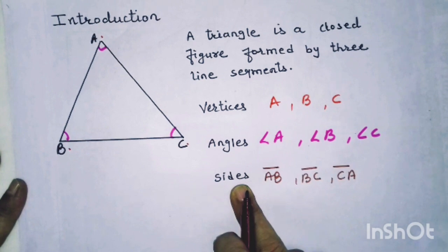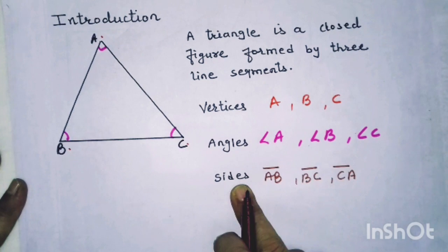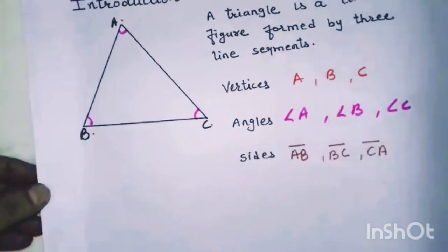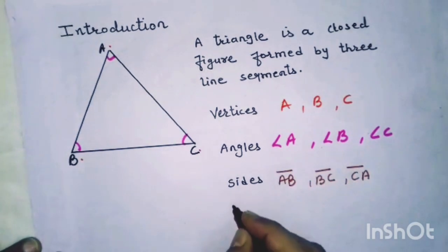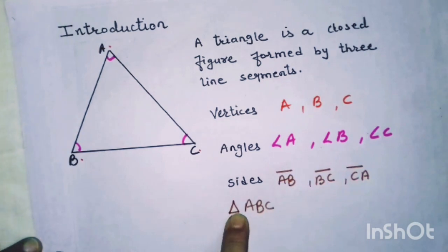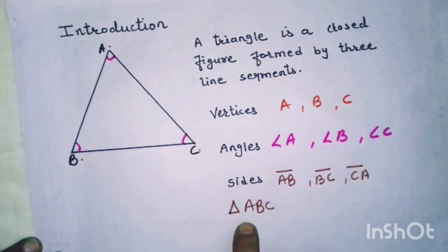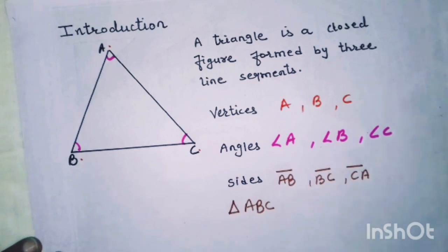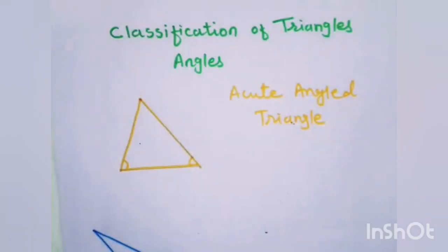These are known as elements of a triangle. And now how are we writing symbolically triangle? Like triangle ABC — we draw a small triangle before writing the name ABC and read it as triangle ABC. Understood children? Now I will explain classification of triangles on the basis of angles.